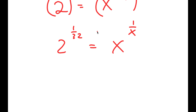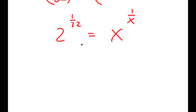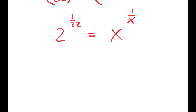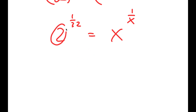Now we want to simplify this, because our end goal is to make this in the form a to the power of 1 over a is equal to b to the power of 1 over b. In that case, a is equal to b. We already have x to the power of 1 over x on the right, so we just need to make the left-hand side be in the form a to the power of 1 over a — meaning this number here has to equal this number.